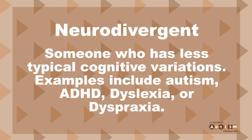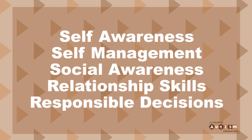Now when you hear someone refer to neurotypical or neurodivergent, you'll know the differences between the two. And though your autistic child may be neurodivergent, it is still very important to incorporate the five social emotional learning core competencies in home, in school, and in your community.